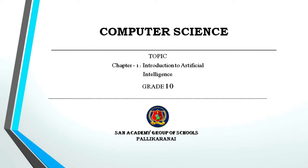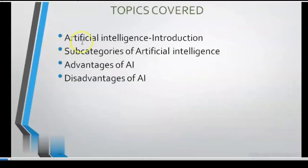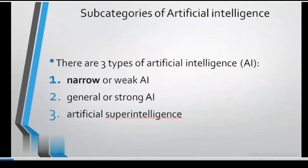Happy day, students! Computer Science, Chapter 1: Introduction to Artificial Intelligence. Most of you would have heard about Artificial Intelligence. It is useful for remote home controlling. Now let's see what topics we are going to cover in this chapter: first we will have an Introduction, then the subcategories of Artificial Intelligence, and then Advantages and Disadvantages.